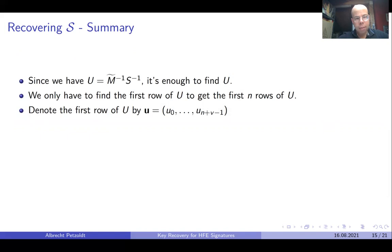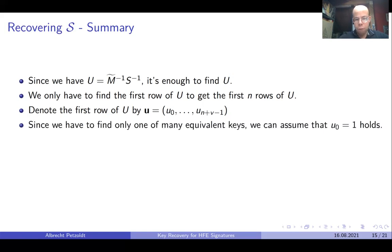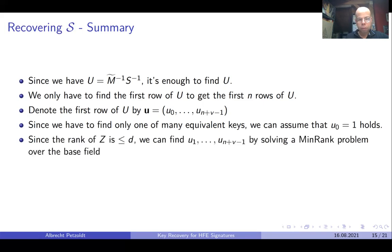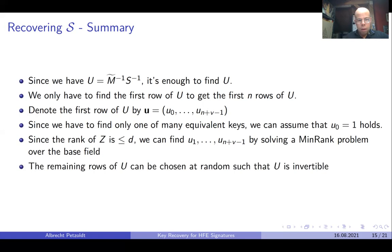To summarize how to recover S: since U = M-tilde^(-1) S^(-1) and M-tilde is known, it is enough to find U, from which we can recover S easily. Due to the previous lemma, we only have to find the first row of U to get the first N rows of the matrix U. Denoting the first row of U by the vector u, and since we only have to find one of the many equivalent keys, we can assume the first component equals 1. Since the rank of Z is at most D, we can find the unknown elements of u by solving a min-rank problem over the base field. The remaining rows of U are chosen randomly such that the full (N+V) × (N+V) matrix U is invertible.